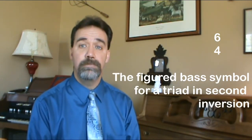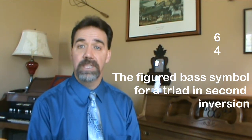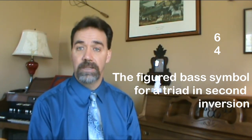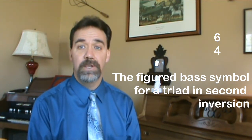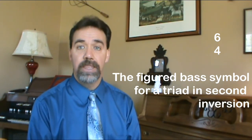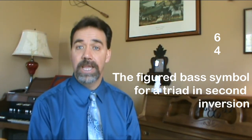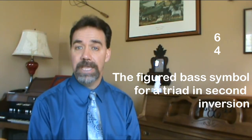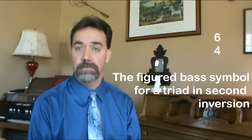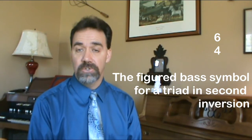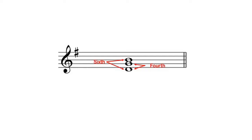Six-four refers to the figured bass symbols that go with a triad in second inversion. From my video on spelling triads, one of the characteristics of a triad is inversion. When the fifth of the chord is in the bass, we call it second inversion. If we were to spell the triad in its closest position, we'll see that we have a sixth above the bass and a fourth above the bass. Therefore, a second inversion triad gets the figured bass symbol six-four.